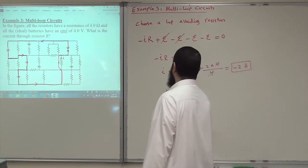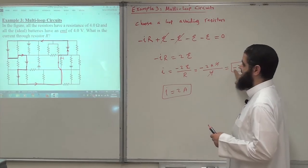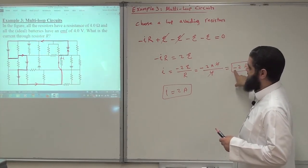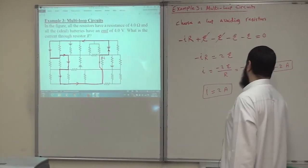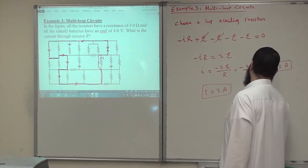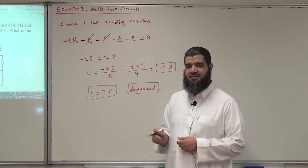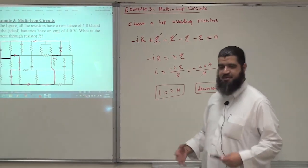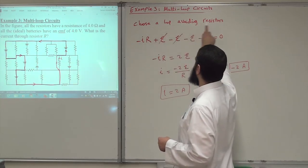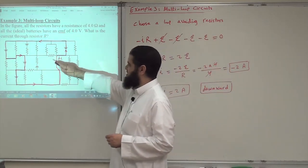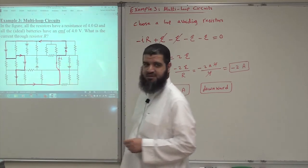This gives minus 2 multiplied by 4 volts divided by 4 ohms, which is minus 2 amperes. The current I has a magnitude of 2 amperes. The minus sign tells us that the chosen direction was not correct — the correct direction of the current is downward. It turns out to be a very simple problem if you properly choose the smartest loop, avoiding resistors except the resistor of interest. Thank you.